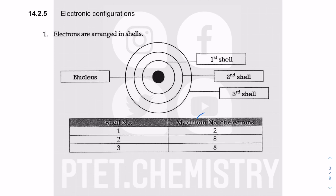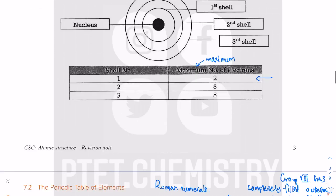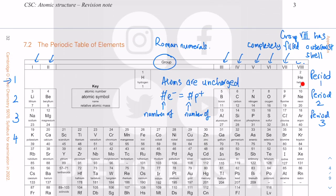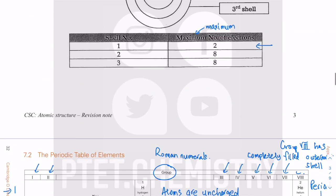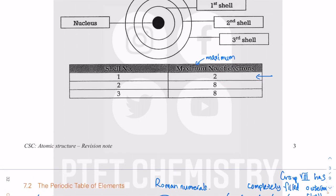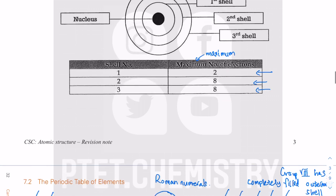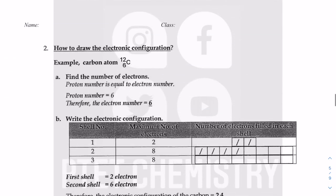The first shell can only have a maximum of two electrons. Where does the two come from? Look at your horizontal row — maximum two electrons. Second horizontal row, maximum eight electrons. Third period, maximum eight. That is where the 2, 8, 8 come from — they come from the periodic table which you are given for free in the real exam.